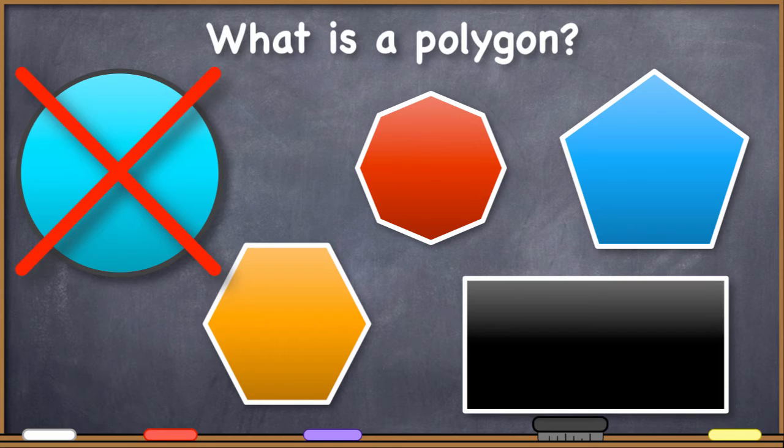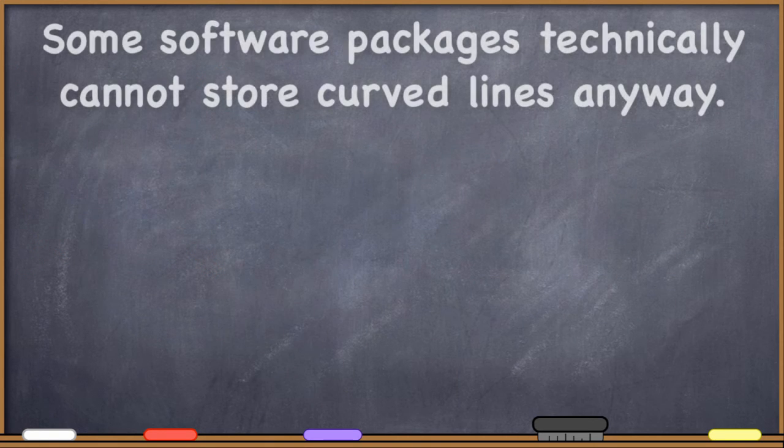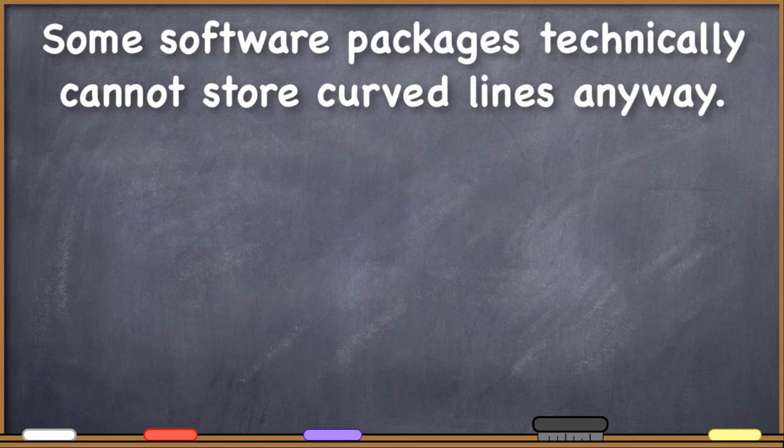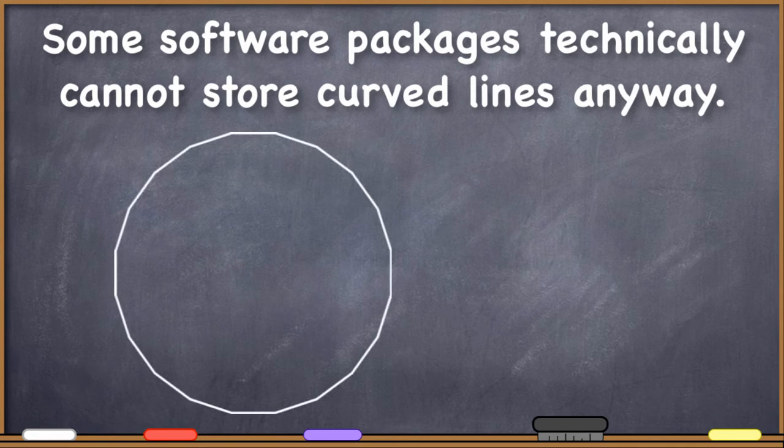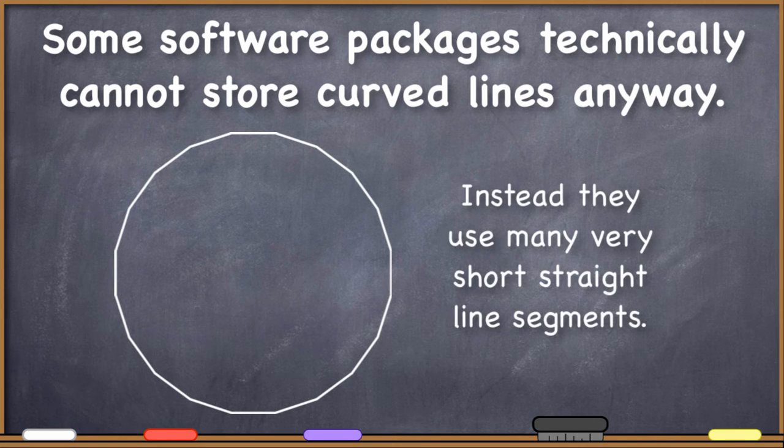Further, if we used curved lines of any kind, then we're technically not creating polygons. But nevertheless, in many GIS software packages, they continue to use the term polygon to also include geometric representations of this kind. And to further complicate matters, some GIS software packages cannot technically store curved lines anyway. So when it looks like you have curved lines, if you zoom in very, very close, you'll actually see that they have many, many, many, many very short, straight line segments.